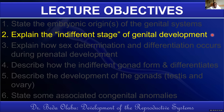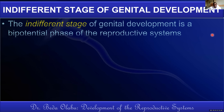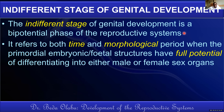The indifferent stage of genital development is a bipotential phase of the reproductive system. It refers to a time and morphological period when the embryonic structures that give rise to the reproductive systems have full potential of either becoming male or becoming female.